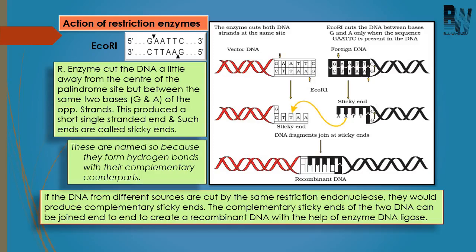This is how recombinant DNA can be produced. The two cut DNA fragments can be joined together by DNA ligase to form recombinant DNA. The action of restriction enzyme and the figure related to it is given here.